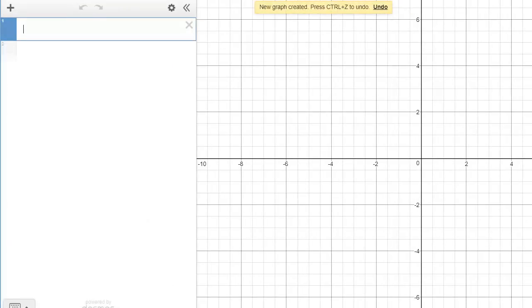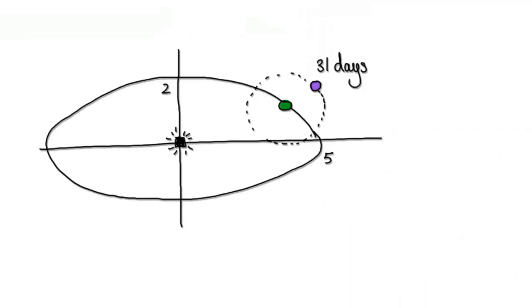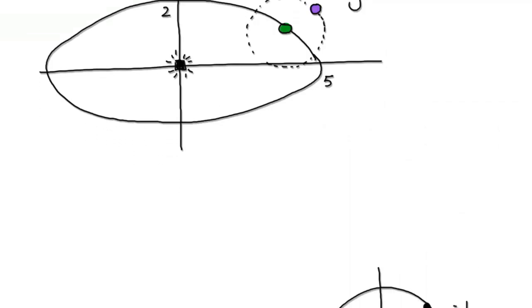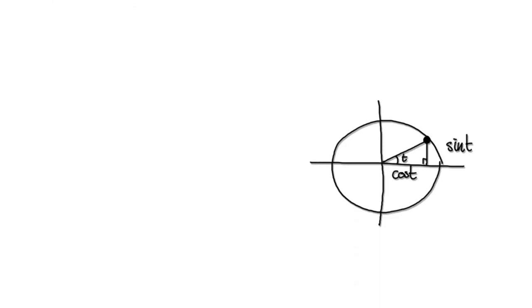We know that when given a unit circle, the height will always be sine t, and the horizontal component will always be cos t.